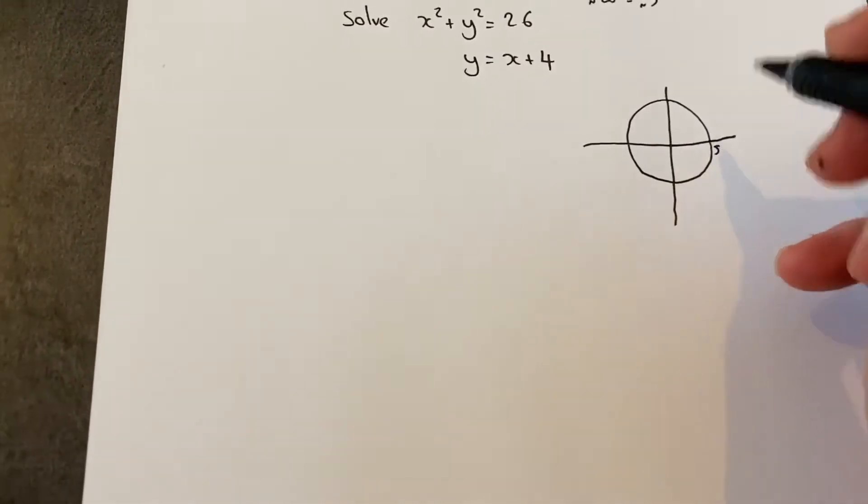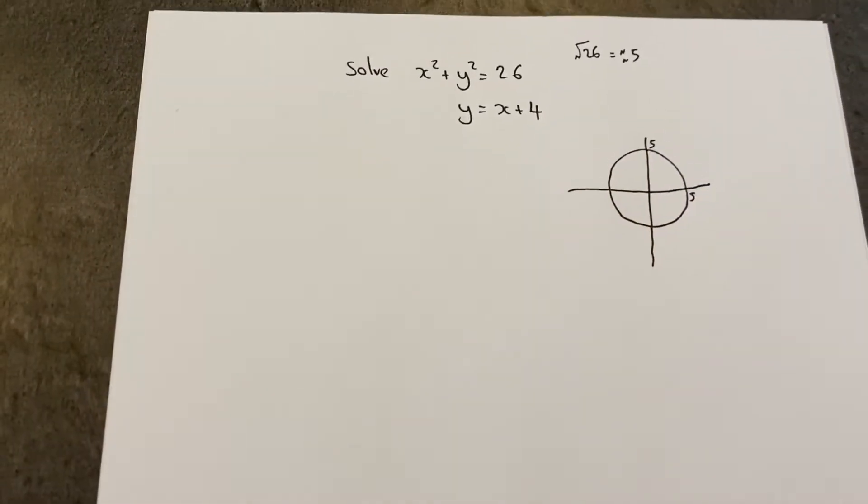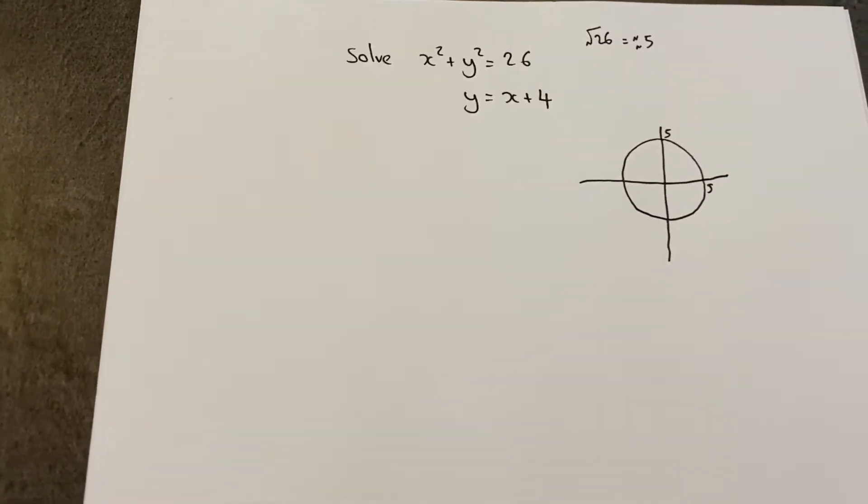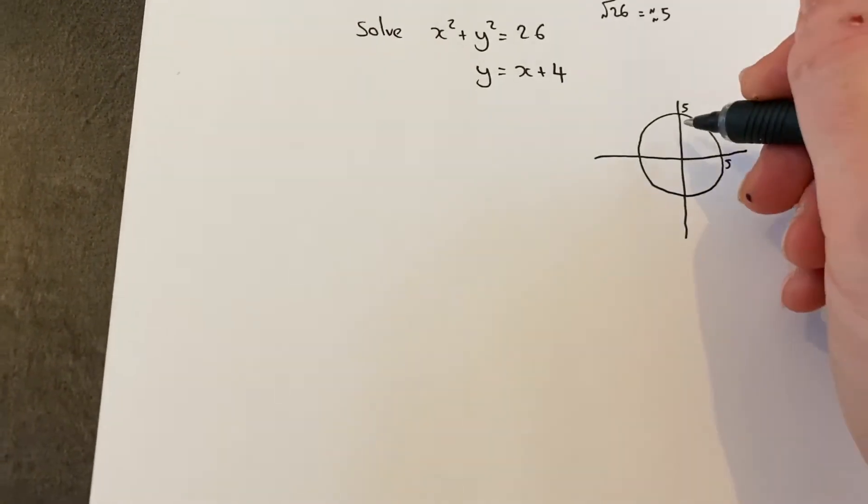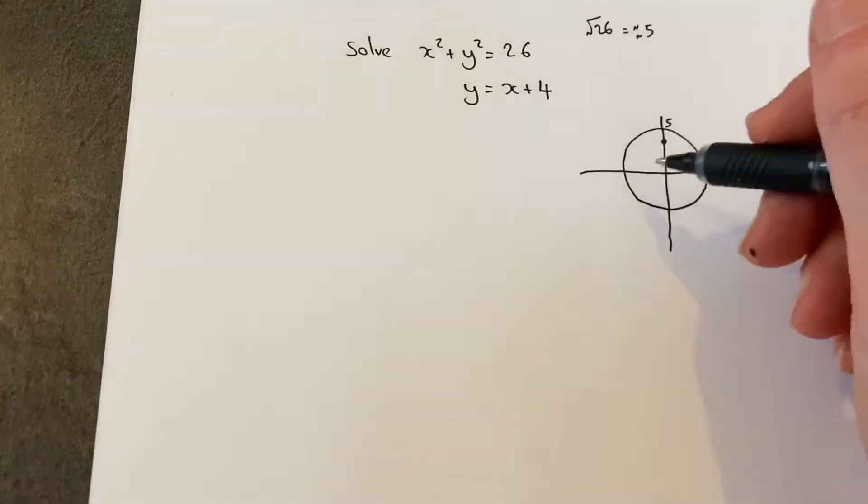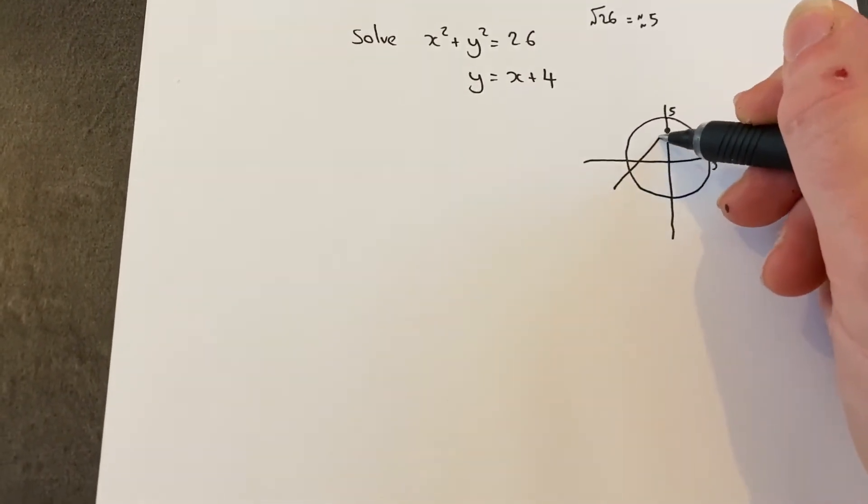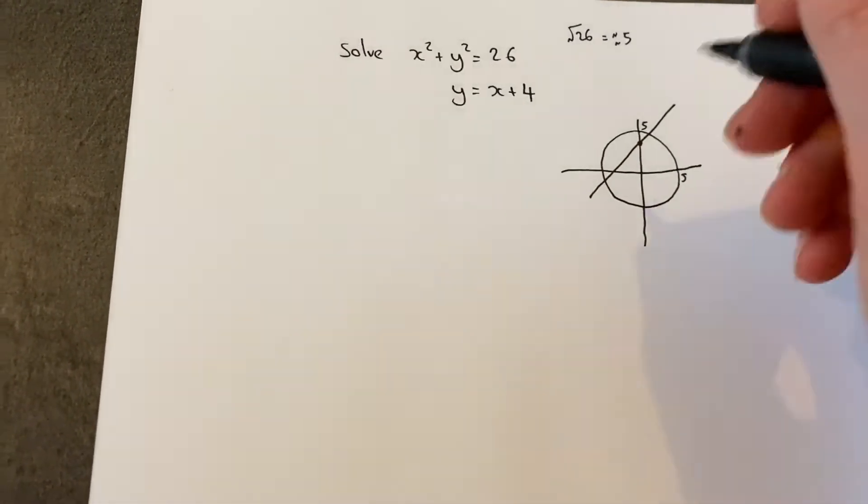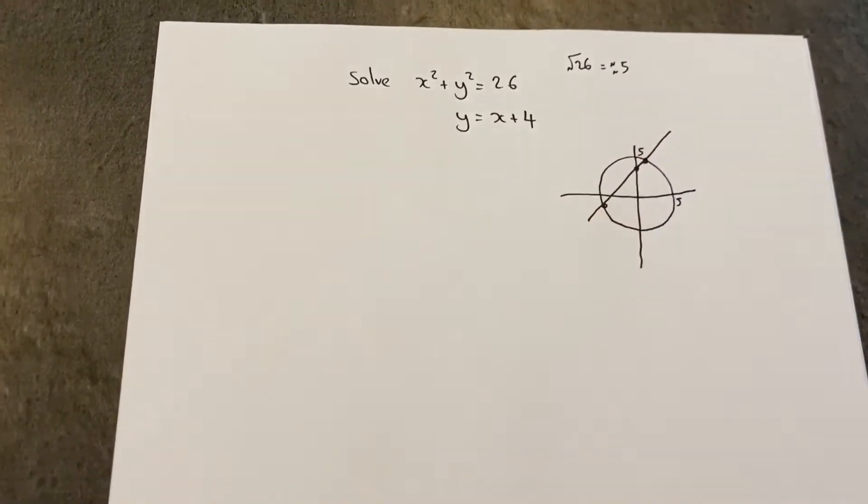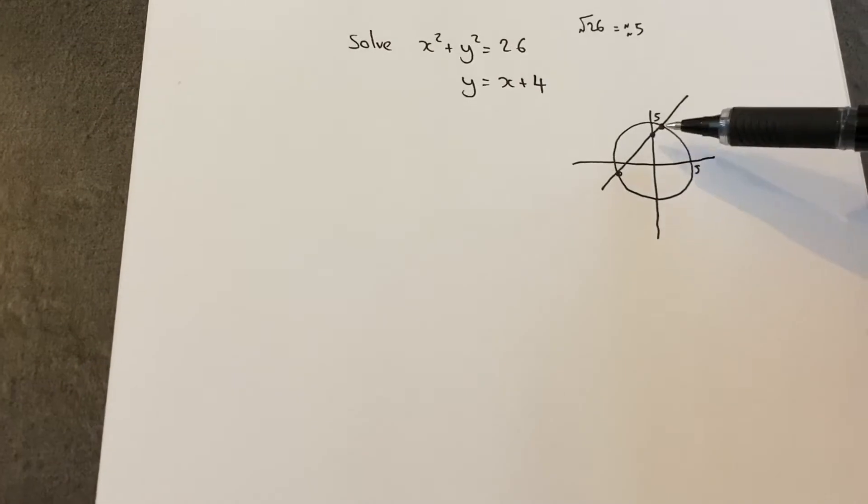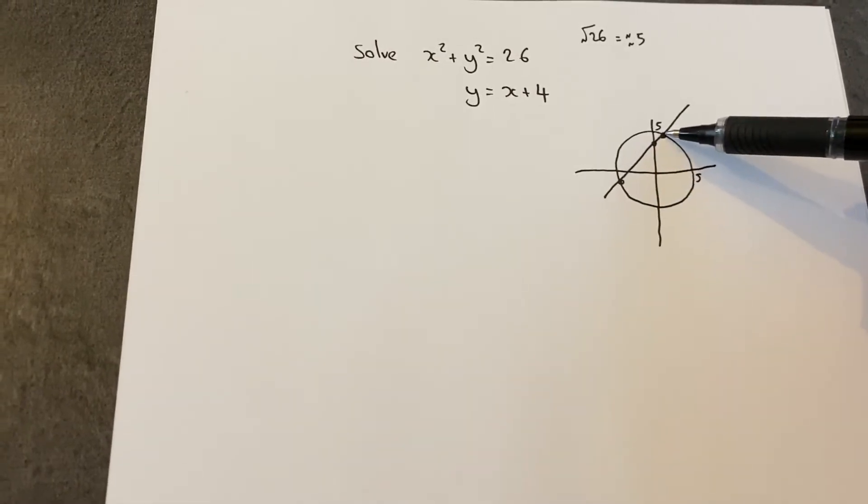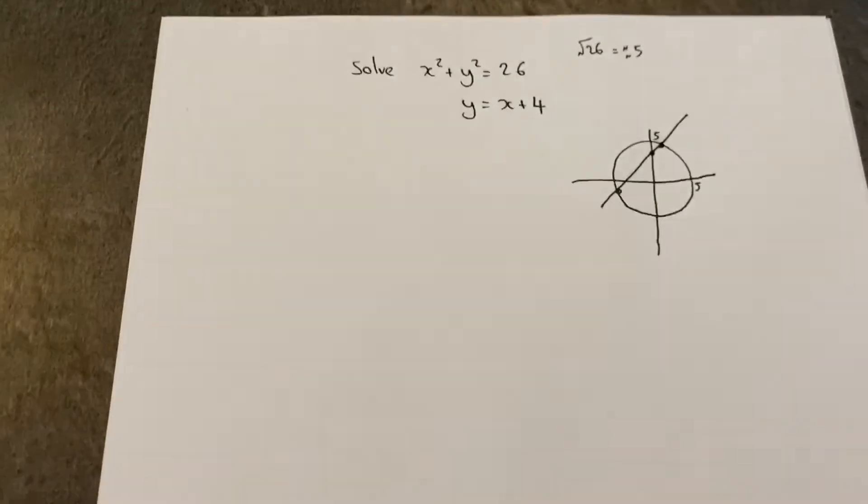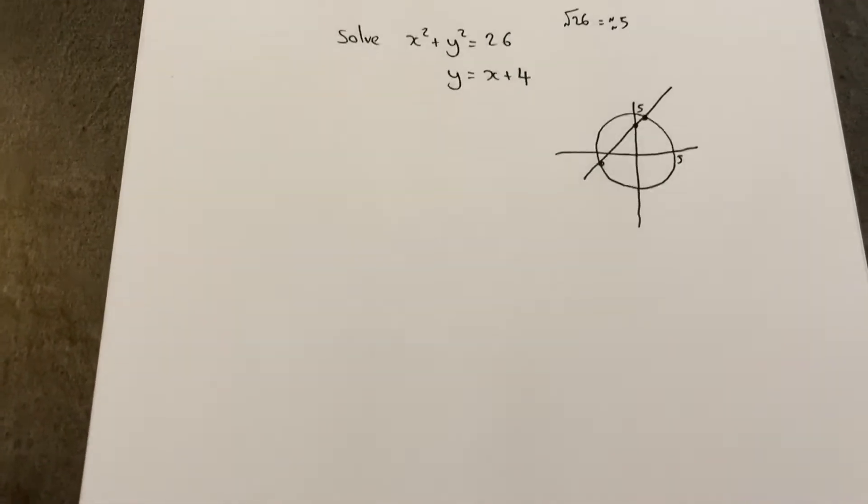Now the second equation, y equals x plus 4, is just a straight line which passes through 4 on the y-axis with a gradient of 1. It looks something like this. The point is that the circle and the line intersect at two distinct coordinates: one in the top right quadrant and one in the bottom left quadrant. I can find where these two coordinates are.